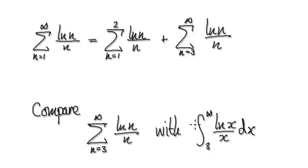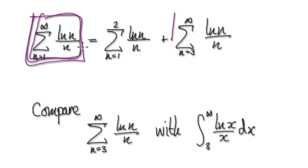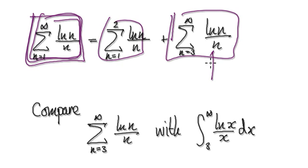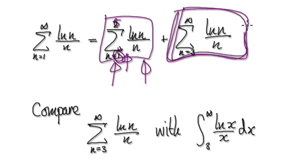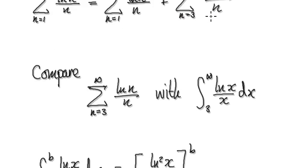We've seen this theorem before. Now we're trying to determine whether this series converges or diverges. We break it into two parts. The first part — the finite sum — is going to produce two definite numbers. So really it boils down to whether or not the tail sum from 3 to infinity will converge or diverge. Let's make the comparison.